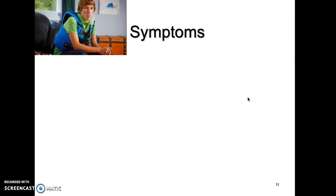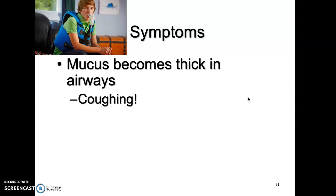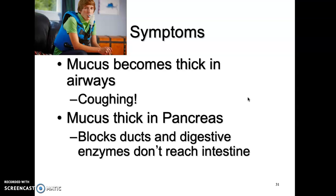This is a picture of an individual with a vest on that does some pounding onto their chest in the lung region to try and loosen some of that stuck mucus. They're also inhaling albuterol to try and dilate the airways so they can breathe better. To enumerate: mucus becomes thick in the airways, causing coughing; mucus thick in the pancreas blocks the ducts and digestive enzymes, so those enzymes may not reach the intestine, impairing digestion.